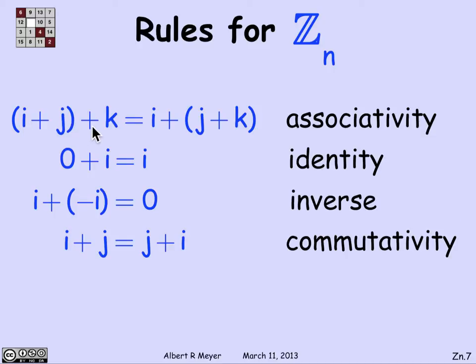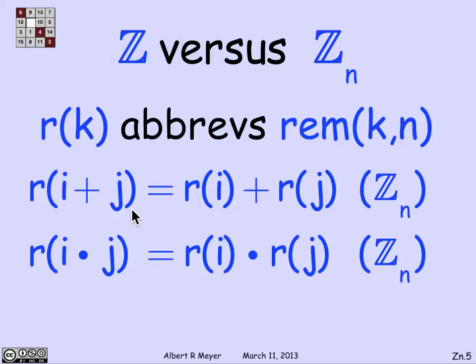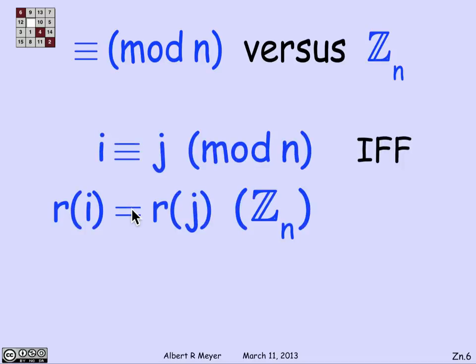First of all, addition is associative. i plus j plus k is i plus j plus k. We have an identity element, literally 0. 0 plus any i is i. We have a minus operation, an inverse operation, with respect to addition,